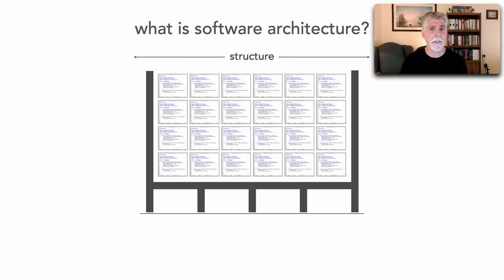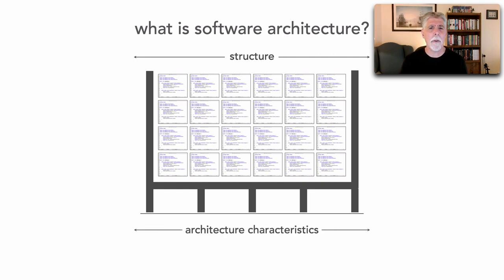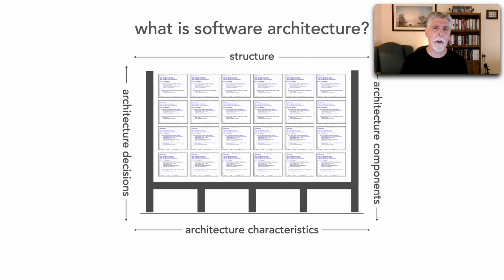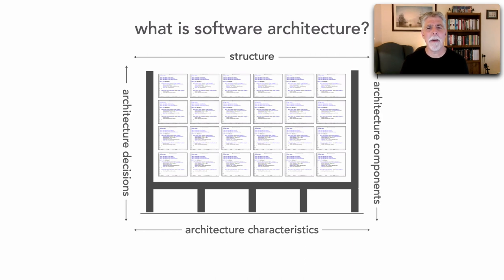The first dimension is the structure itself and how the code is organized physically. Then there's the architecture characteristics dimension. The third dimension is the architecture decisions that we make. And the fourth are the architecture components that make up that architecture. Let me dive into each of these dimensions to give you an example of what I'm really talking about.